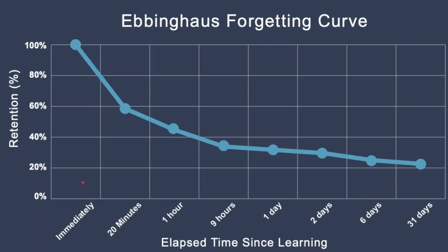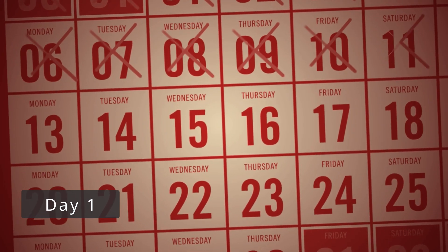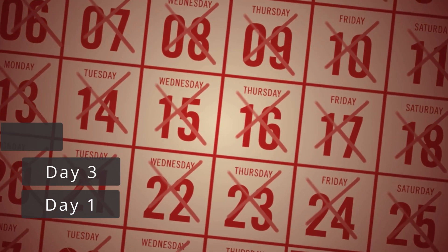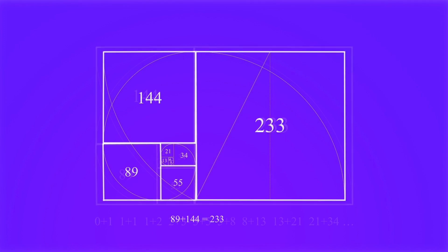This is called the Ebbinghaus learning curve — the amount retained in memory decreases over time. At the immediate level it's 100%, but after about one hour it drops below 50%, and after one to two days it drops to roughly 33%. To avoid this, you need to revise everything at increasing intervals — for example, revise after day one, then day three, then day seven, and so on, like a Fibonacci series. Apply this technique when preparing for interviews as well.